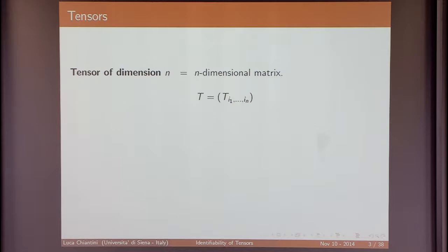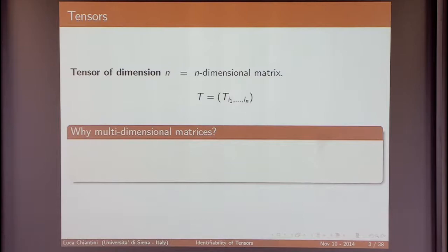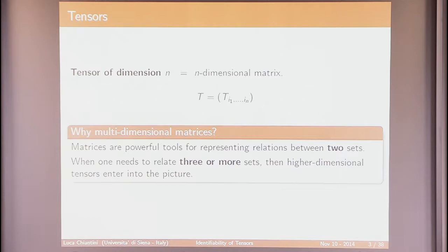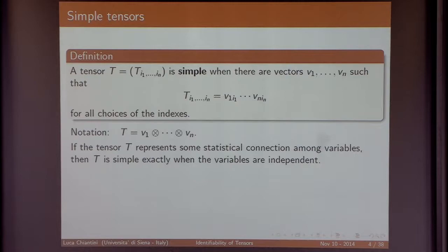This is the plan of the talk. So what is a tensor? Everybody knows what a tensor is. From my point of view, you use matrices when you want to relate two different sets, and you need to use tensors when you relate three or more sets. I will indicate with a simple tensor the tensor product of elements of vectors. The idea is that if a tensor gives some statistical connection among more variables, then 'simple' means that the variables are independent.